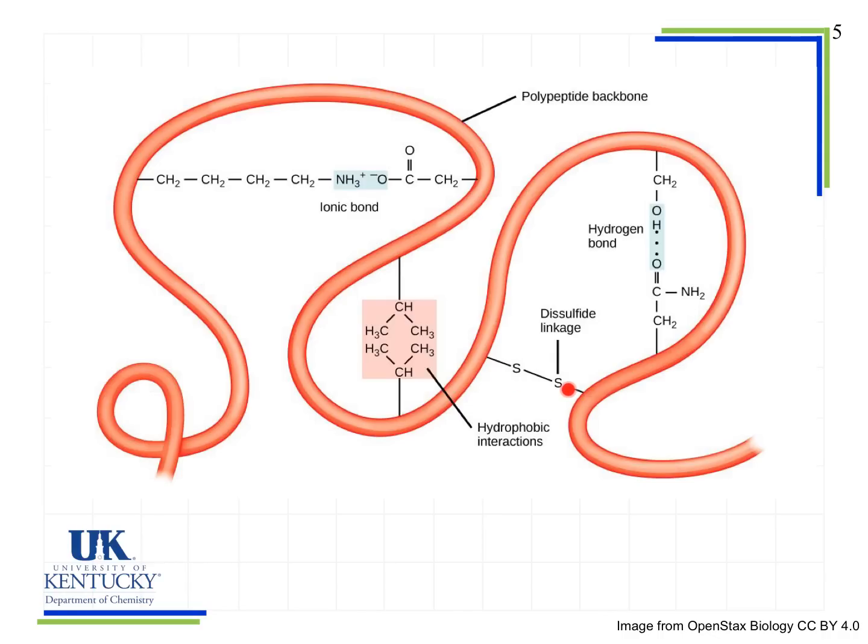Now the interesting thing about disulfide linkages, as you've probably all experienced or been around, is when you're getting your hair chemically straightened or getting a perm. And what you're actually doing is breaking the disulfide linkages in your hair, which are proteins, and then forcing them to form in a different pattern, either curly or straight, whichever one you're trying to get to. Now those don't last forever, but they will last for a while, those kind of forced disulfide linkages.